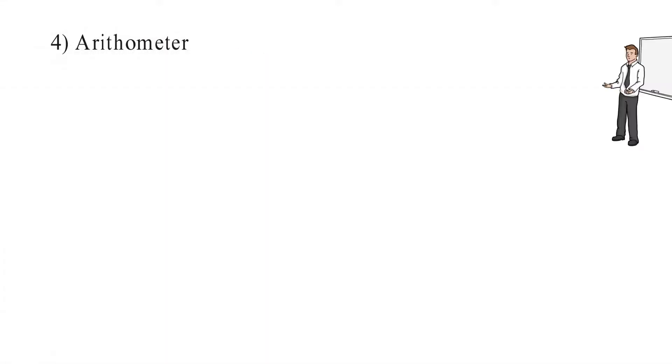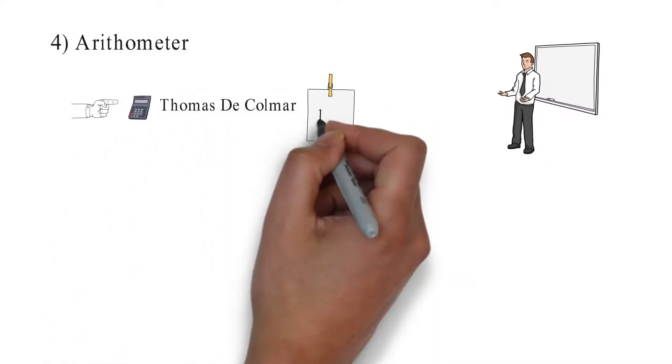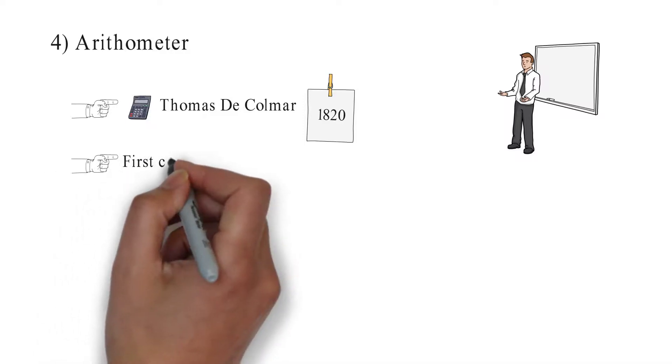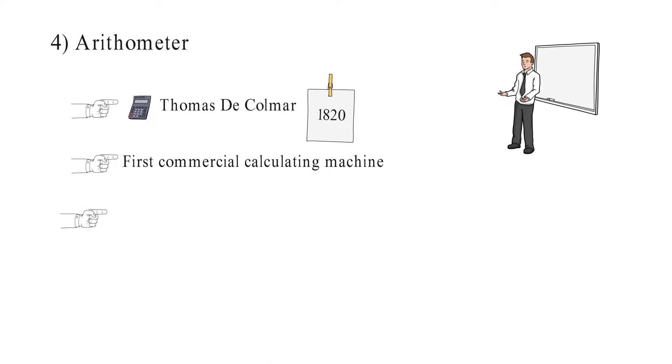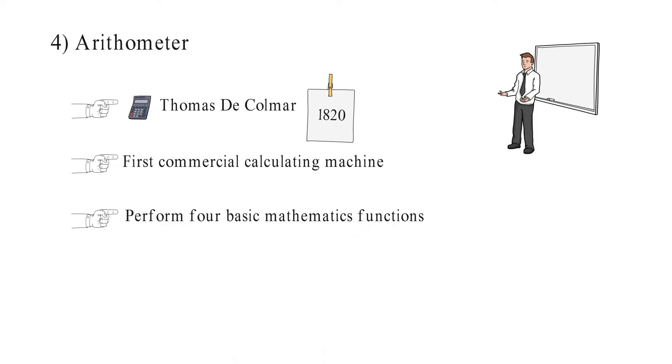Number 4: Arithmometer. An arithmometer was a calculator invented by Thomas de Colmar in 1820. It was the first useful and commercially successful calculating machine. The machine could perform the four basic mathematics functions.